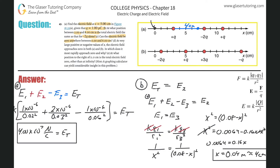You could check specific test points yourself, but knowing the distances are squared and the magnitudes involved, there's no way the field sums to zero in that region. The answer to letter C is no.